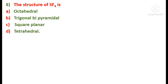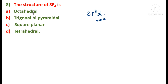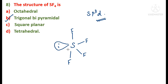The next question asks for the structure of SF₄ — octahedral, trigonal bipyramidal, square planar, or tetrahedral? Sulfur in SF₄ is in the state of SP³D hybridization. This gives a trigonal bipyramidal geometry with one equatorial position occupied by a lone pair of electrons, resulting in a see-saw structure with four bond pairs and one lone pair. The structure is trigonal bipyramidal.